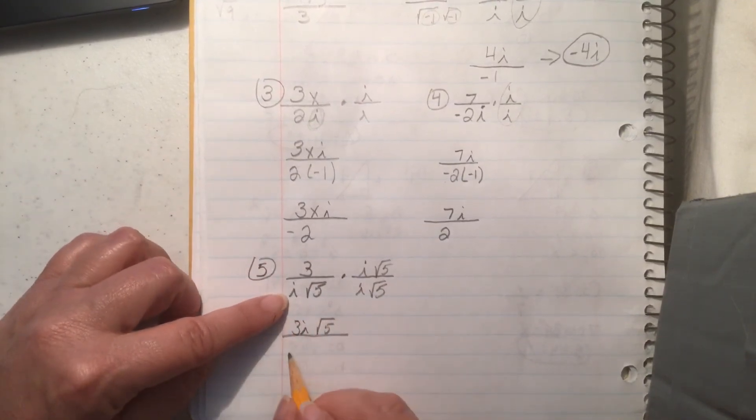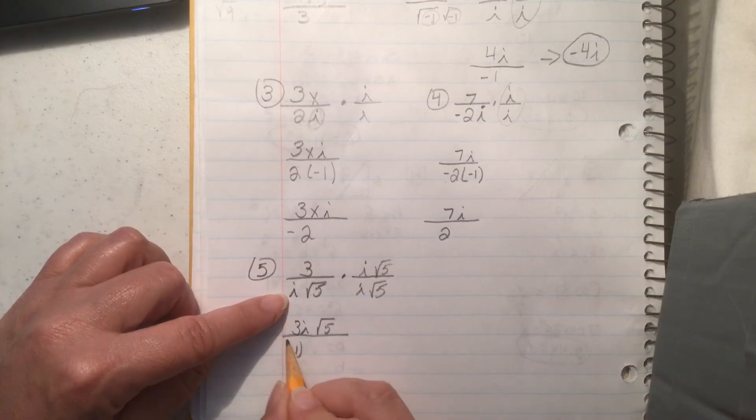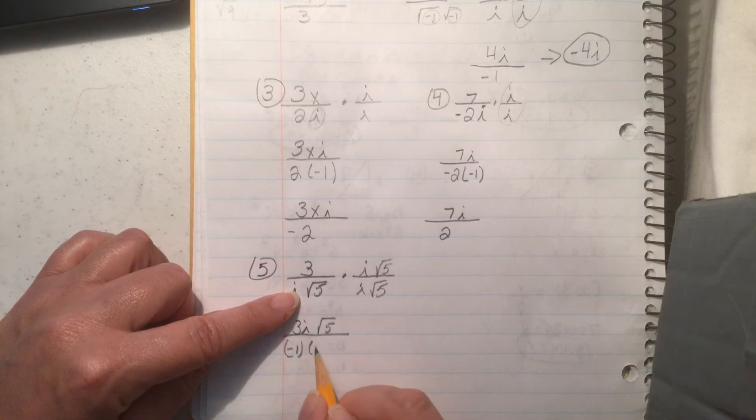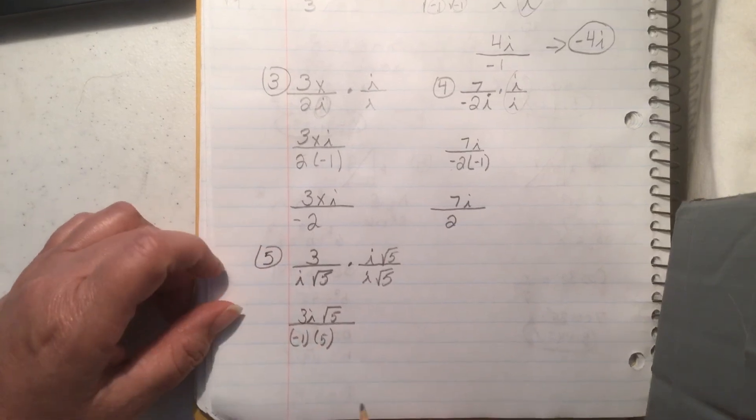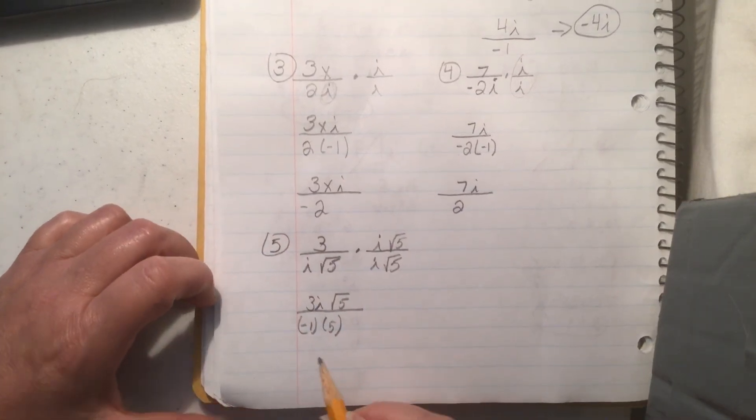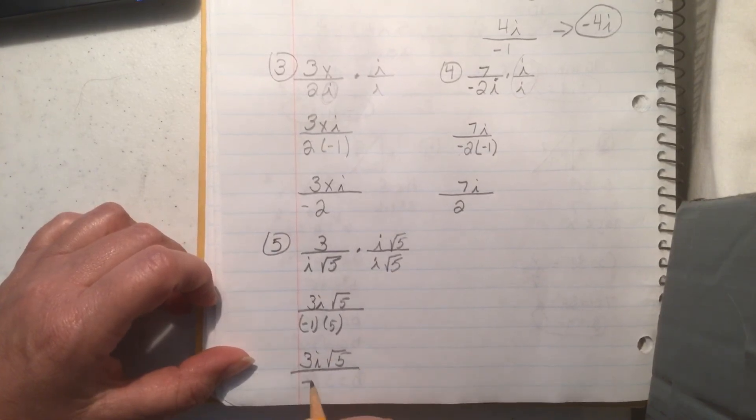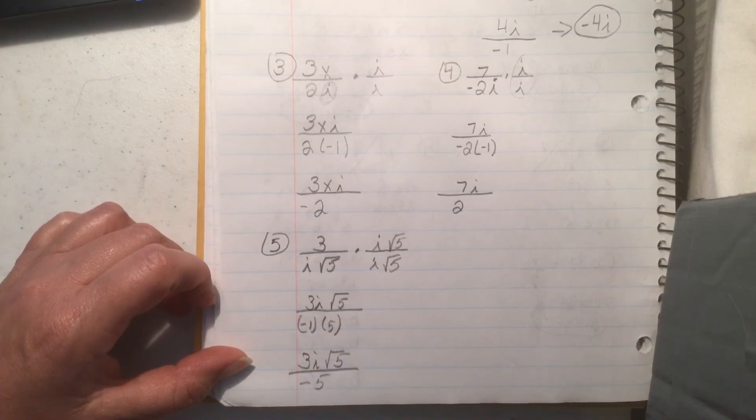i times i is negative 1 and square root of 5 times square root of 5 is just going to be 5 so that's going to leave me with 3i square root of 5 over negative 5. Ta-da!